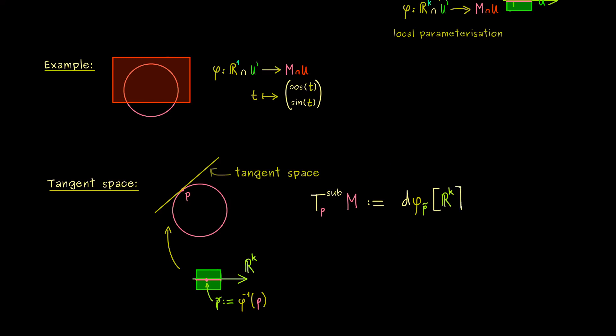So now we have the differential and now we look at the range of this linear map. In other words, we just put the whole vector space R^k into it. In other words, it's just the range of the Jacobian matrix of phi. Therefore, you can also write Jacobian matrix of phi at the point p tilde, which is phi inverse of p. And then you just multiply all vectors x from R^k from the right-hand side to the matrix. Then we get out a lot of vectors in R^n and they form a subspace.